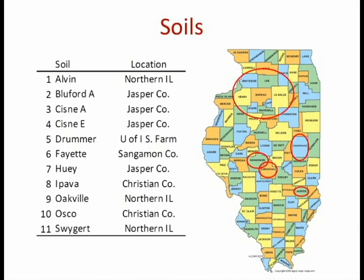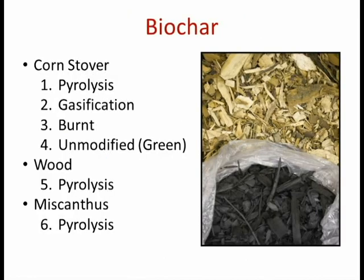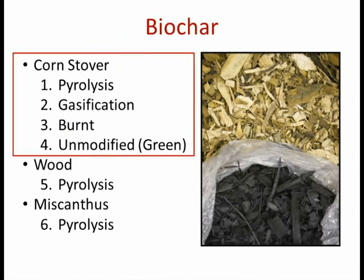We had six different biochar types that were part of the study. In the work I'm going to describe today, I'm focused on the corn stover part of this project. We used corn stover biochar produced via gasification and via pyrolysis. We also looked at simply burnt corn stover and corn stover that was unmodified — just ground up, not converted to biochar. This aspect is especially interesting: how the organic material converted to biochar differs from the unmodified organic material when it gets into soil.